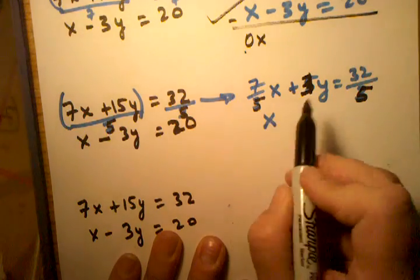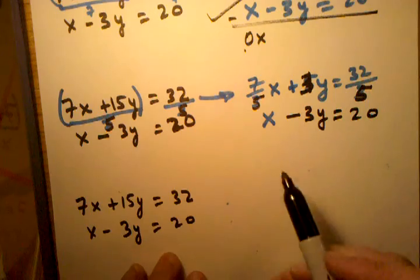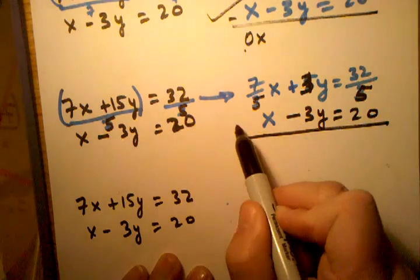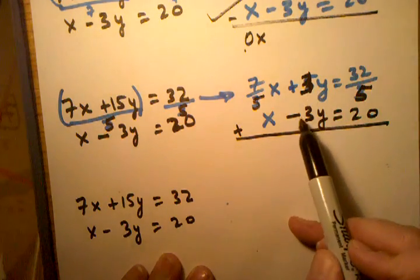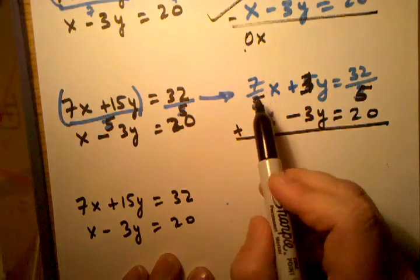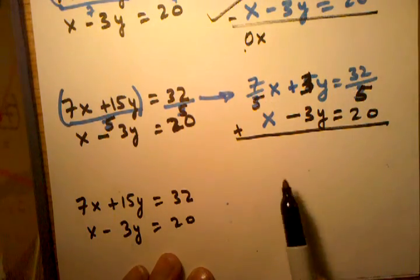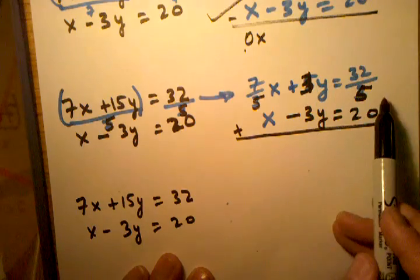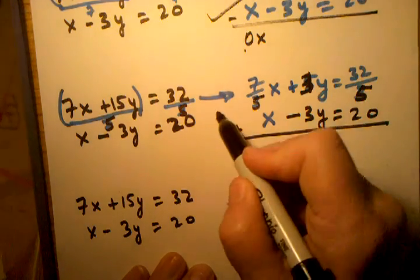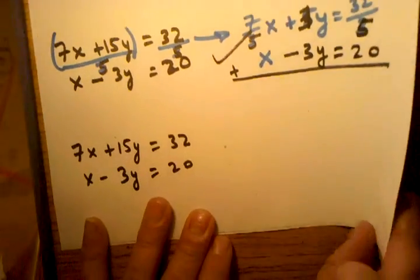When I actually in this case I would need to add my two equations because I can see if I add a 3 and a negative 3 I'll end up with 0. I would end up having to add 7 fifths x plus 1x, starting to look ugly I'm dealing with fractions here. I would eliminate the y variable that's nice but then I got to do 32 fifths plus 20, yuck I'm not going to choose that method either. If the numbers are friendly to you in that particular example go for it you can use that particular method.